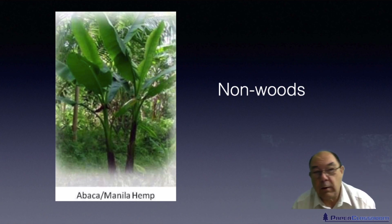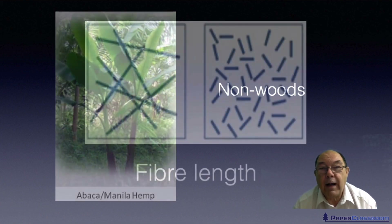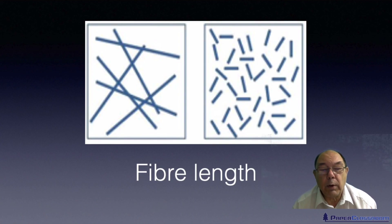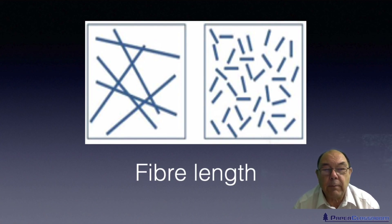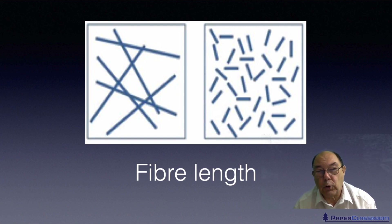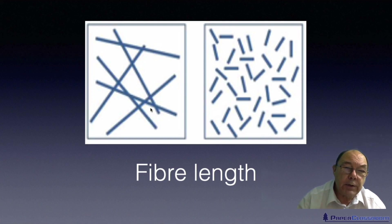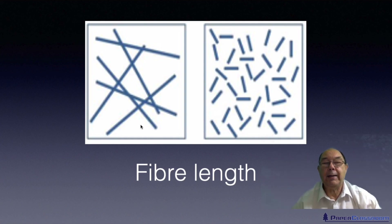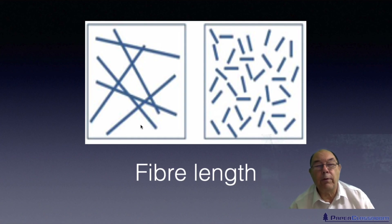Does the papermaker want a non-wood fibre or a wood fibre? Does he need long fibres for strength or short fibres for what we call formation or appearance? This is an illustration of the effect of fibre length. If you look at the diagram on the left, we have half a dozen long fibres. These fibres have multiple crossovers and that will give you a strong sheet. But there are areas with lots of fibre and areas with very little fibre, so if you held this up to the light you'd see a very patchy, blotchy, uneven sheet — poor formation.